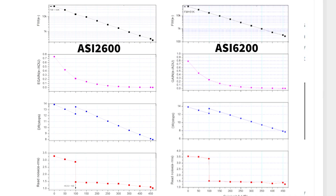So first let's compare the 2600 with the ASI 6200. They are almost identical in every way. There are very subtle differences, but the main thing between the two of them is just that the 2600 is an APS-C size sensor while the 6200 is a full frame sensor. Full well on the 6200 tops out at 51k where the full well on the 2600 is only at 50k. The noise — the read noise — is about the same, and the DR stops are about the same. Pretty much across the board the same specs.